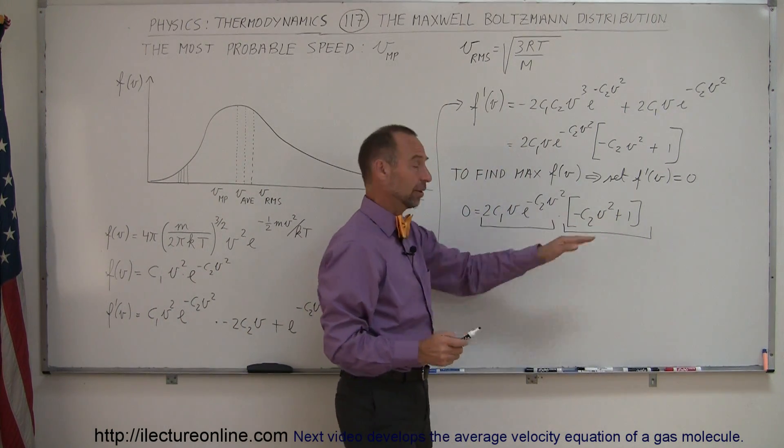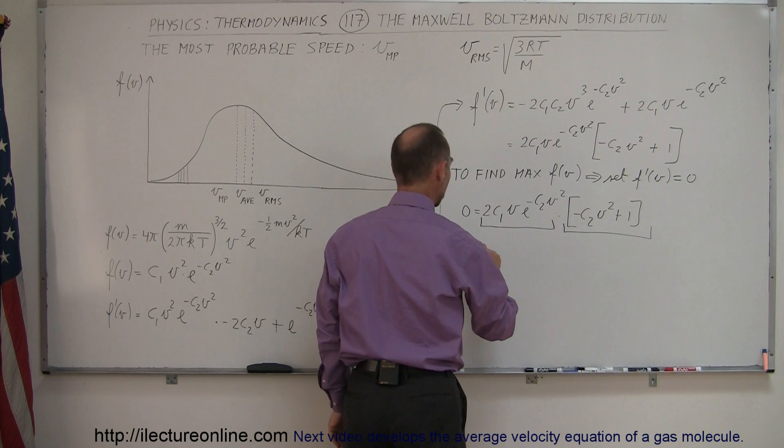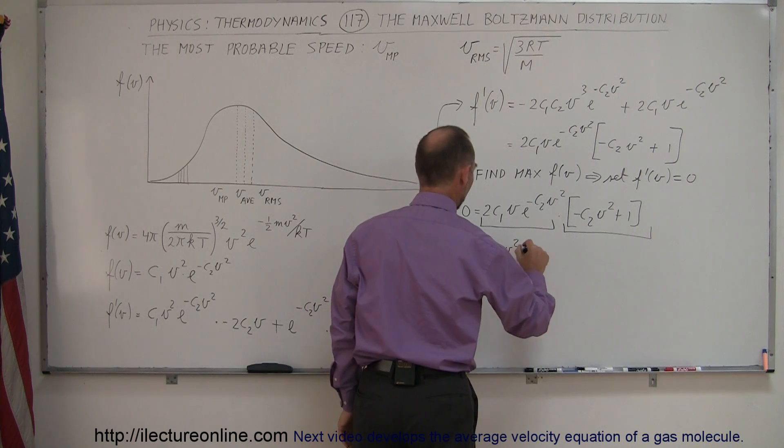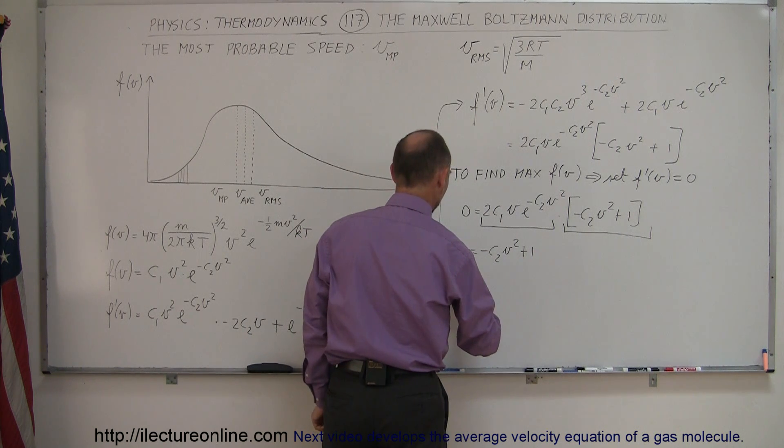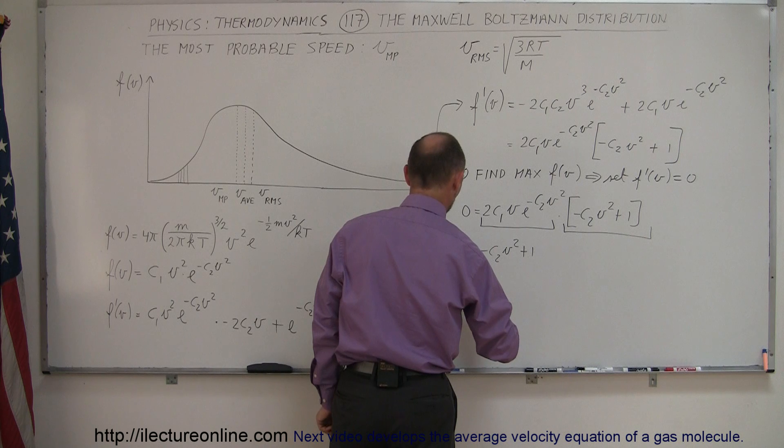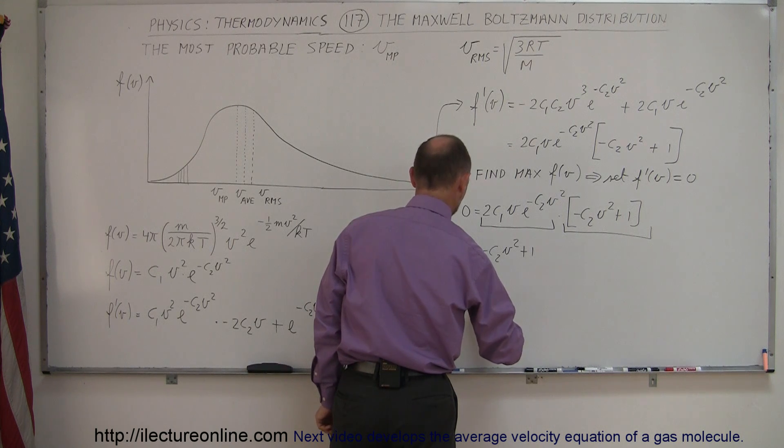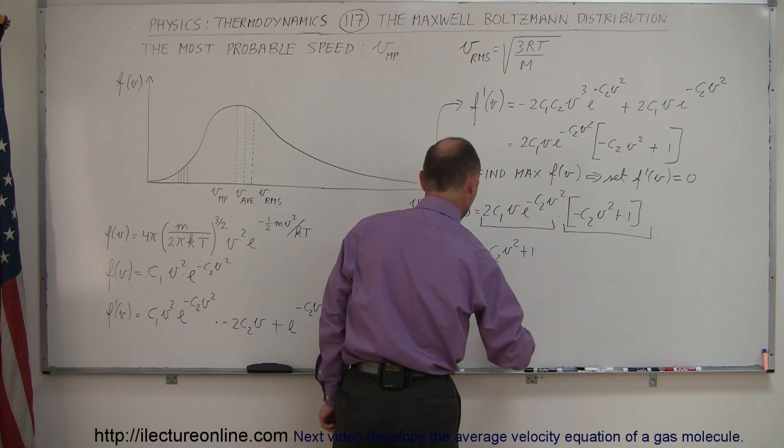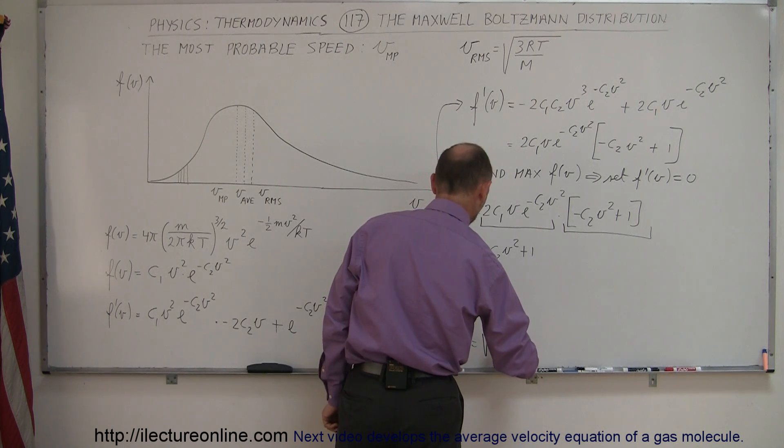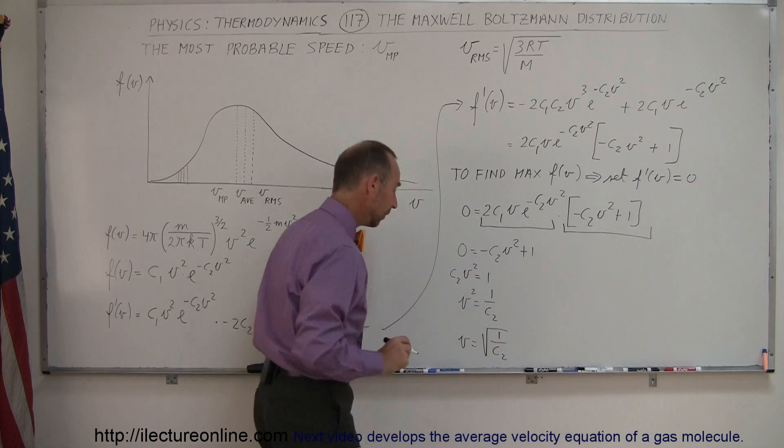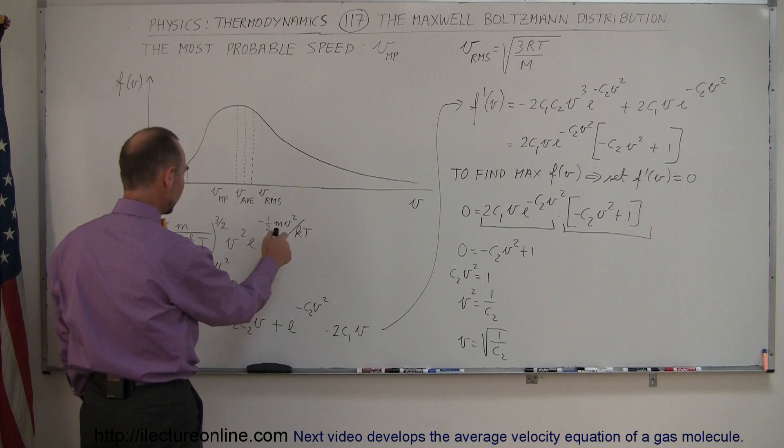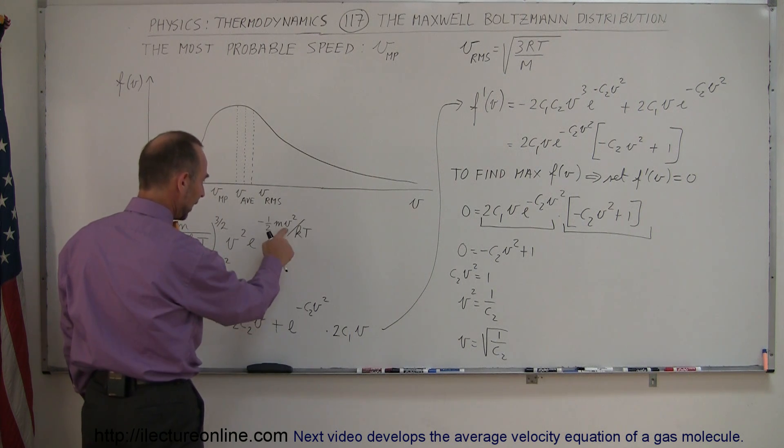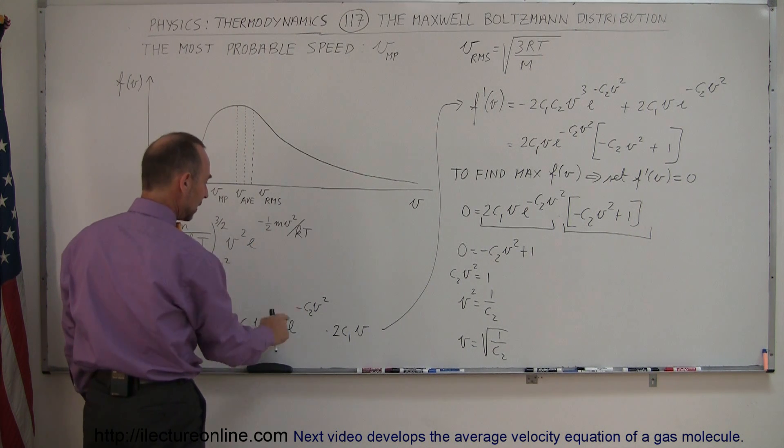Let's set this equal to zero. So zero equals minus c2v squared plus 1. And so that means that c2v squared equals 1 or v squared is equal to 1 over c2. Or finally, we could say that v is equal to the square root of 1 over c2. Now let's go back and see what c2 was equal to. I made the substitution for this quantity right here. Everything but the v squared became c2.